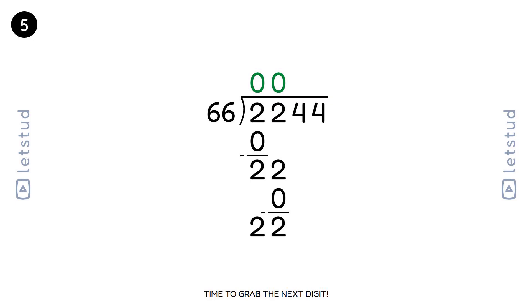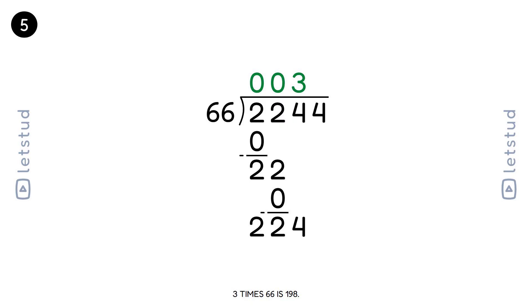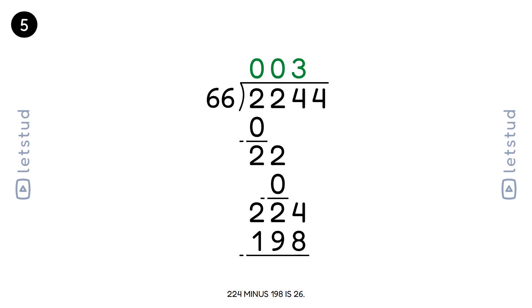Time to grab the next digit. We have a remainder of 22 and bring down the 4 to make 224. 66 fits into 224 three times. 3 times 66 is 198. 224 minus 198 is 26.